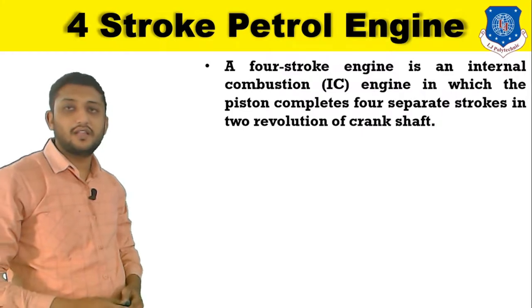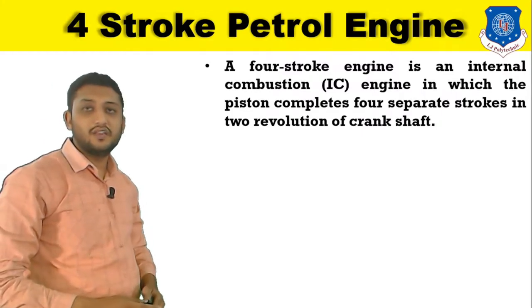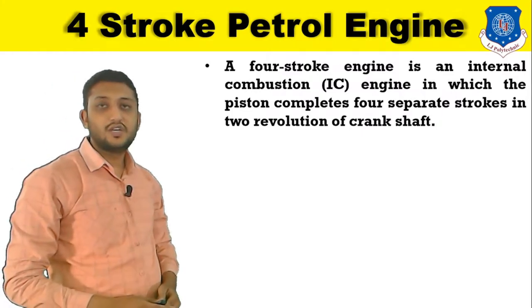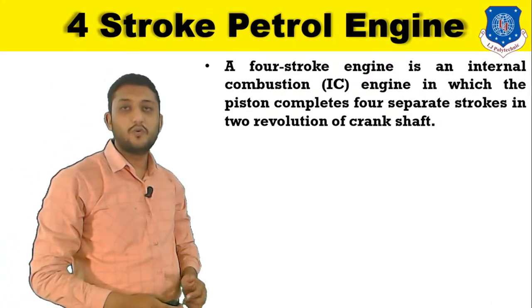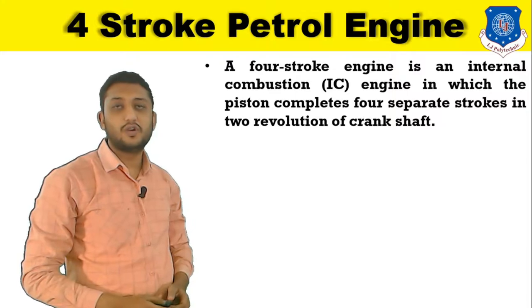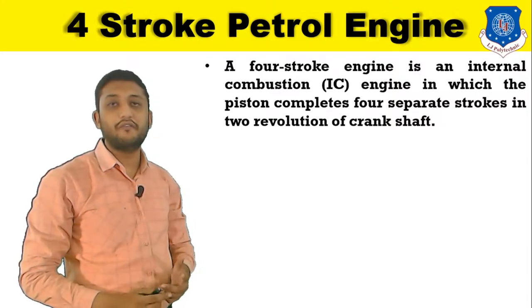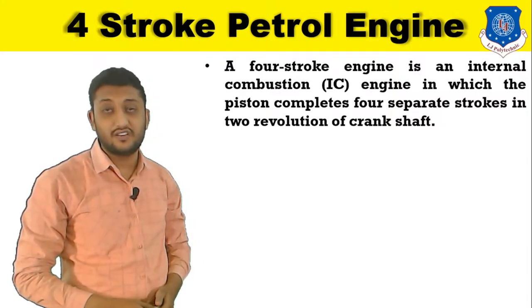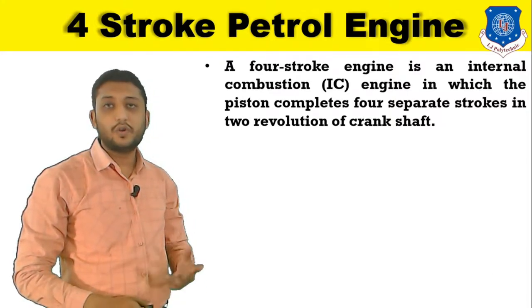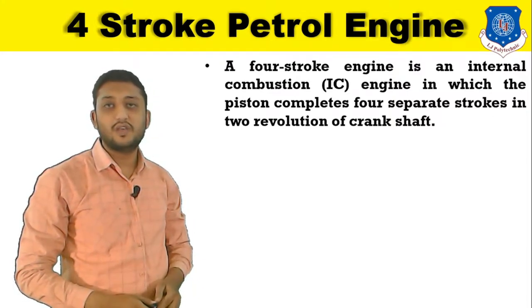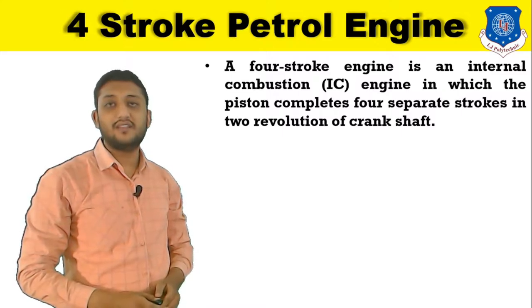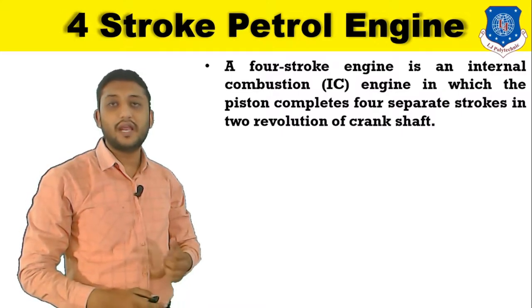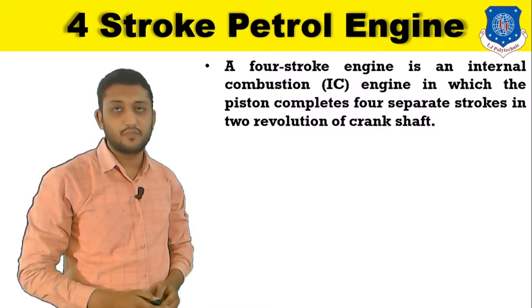A 4 stroke petrol engine is an engine in which there is a single power stroke produced during 2 revolutions of the crankshaft. 2 revolutions means when the crankshaft rotates 720 degrees, you get 1 power stroke.